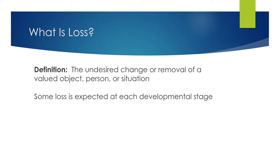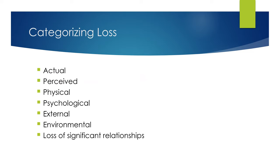Some loss is expected at each developmental stage. For example, infants have to give up the breast or bottle, and those of you that have kids know how difficult this loss can be. When categorizing loss, actual loss includes the death of a loved one, a relationship, theft, deterioration, destruction, or natural disaster. This loss can be identified by others — for example, hair loss during chemotherapy. Perceived loss is internal and identified only by the person experiencing it, such as a woman with a sexually transmitted infection perceiving a loss of her purity.